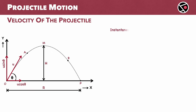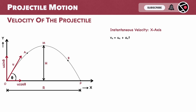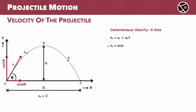Let's start with the horizontal direction. For any point on the trajectory, the velocity V is U plus AT. In the X direction, initial velocity Ux is U cos theta, and the acceleration Ax is 0 — there is no acceleration in the horizontal direction. So Vx is U cos theta. The horizontal velocity is constant as we move along the path from O to A, going up to M, then down to point B, and finally to P. Always U cos theta.